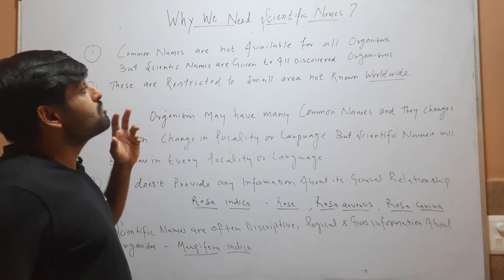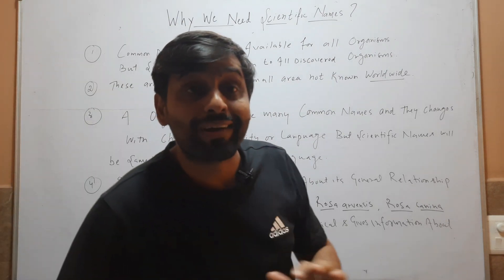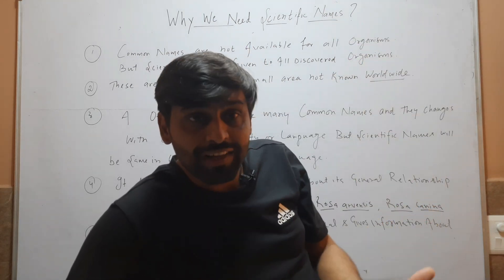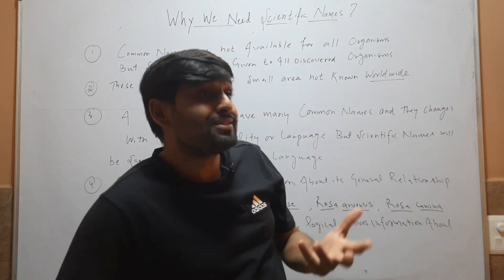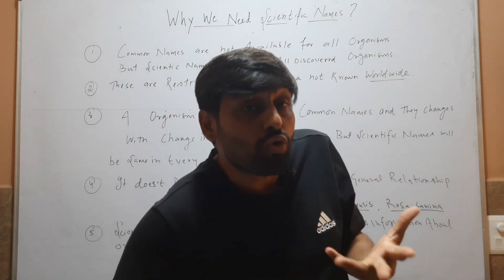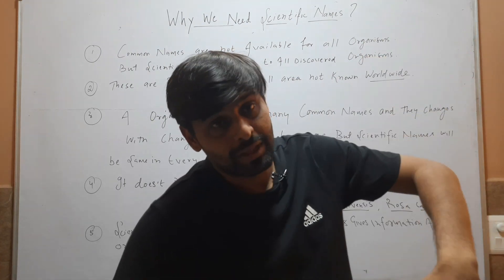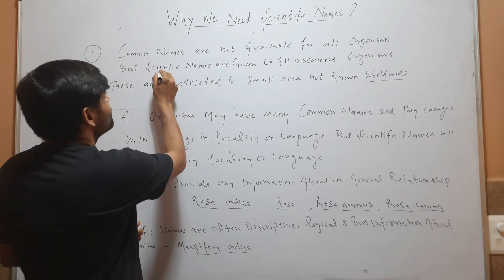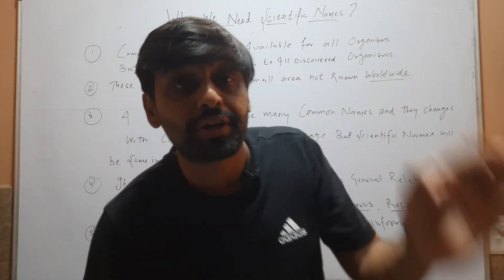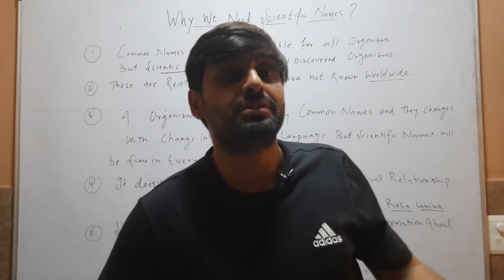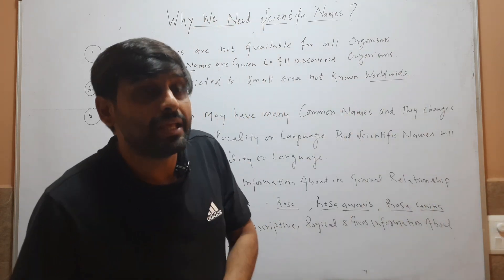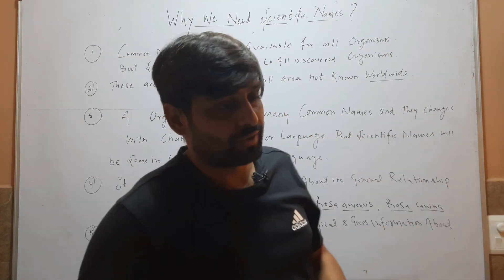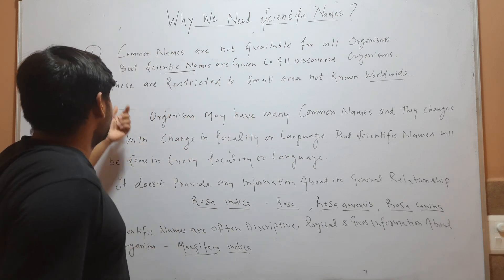The first reason is that common names are not available to all organisms. Common names are known only in a locality, in a small geographical area, and all the plants present in the world do not have a common name for every small geographical area. So common names are not available for all organisms, but scientific names are given to all discovered organisms. All organisms discovered so far have a scientific name, but common names are not given to all discovered organisms.